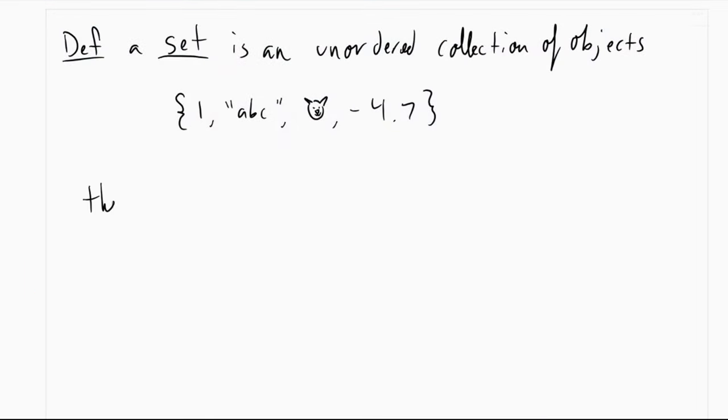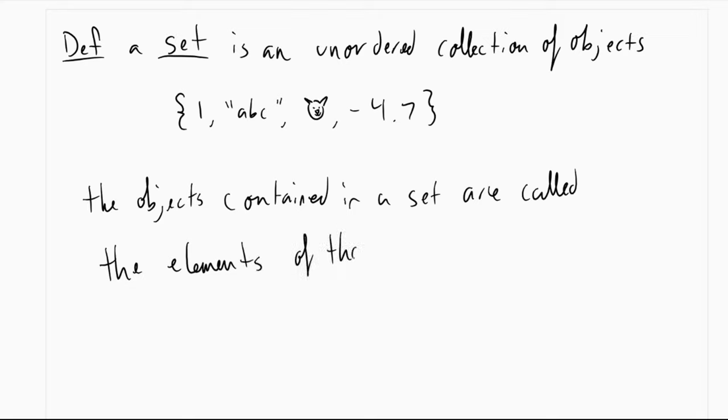Now we say that the objects contained in a set are called the elements of that set. So one is an element of our set, this cat bat thing is an element, negative 4.7 is an element and so on. We would also say that a set contains its elements. So our set contains 1, abc, bat, and negative 4.7.